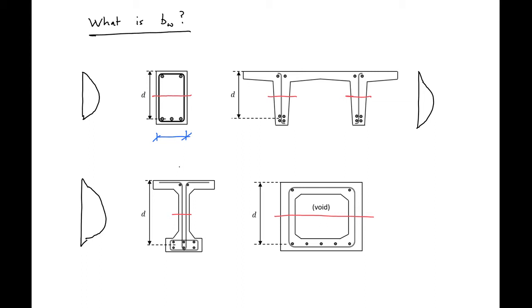If we have a double T section with a different height at the top and bottom of our web, we can take the mid-height of that and our BW would be equal to both of these web components combined. In an I section, we'll just have our BW equal to our web width at the centroid of the section.